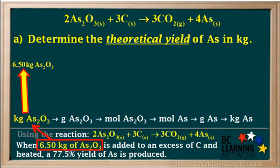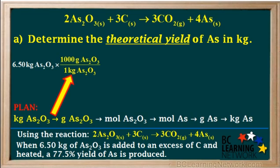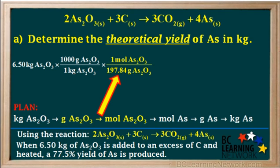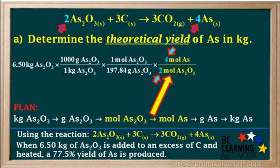We start by writing down 6.5 kilograms of As2O3. The first step is to change kilograms to grams, so we multiply by 1000 grams per 1 kilogram. In the next step, we convert grams of As2O3 into moles by multiplying by 1 mole over the molar mass of As2O3, 197.84 grams. The next step is our mole bridge, so we convert moles of As2O3 to moles of As. Looking at the balanced equation, we see the coefficient on As is 4 and the coefficient on As2O3 is 2, so we multiply by the mole ratio 4 moles of As to 2 moles of As2O3.